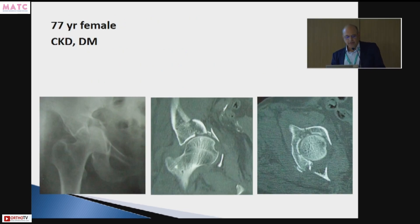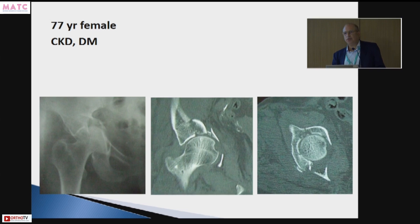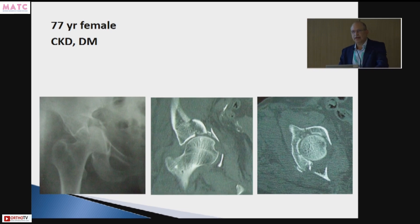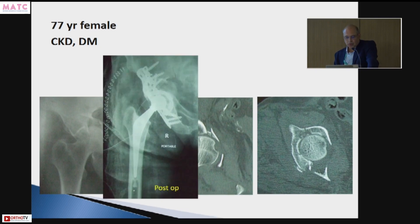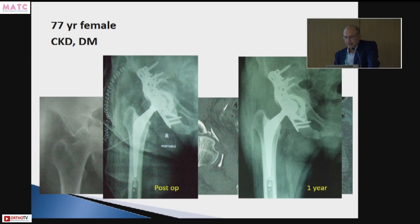A 77-year-old female on dialysis with severe diabetes — you can see the poor bone quality and significant comminution in the acetabulum. If we had done fixation, it would likely require conversion to a total hip. Remember, in elderly patients, close to 20% of acetabular fractures need conversion to total hip within five years. Through a single posterior approach, I performed posterior plating and used a cage with a cemented hip. This is the post-op picture and the X-ray at one year.